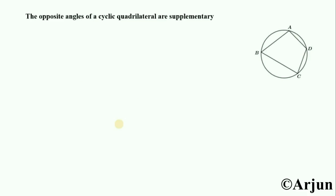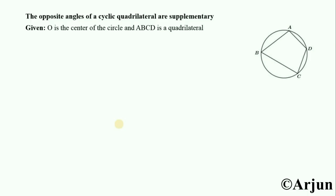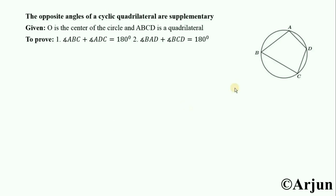For this, our figure ABCD are the cyclic points on a circle, then ABCD is a cyclic quadrilateral. Here, given is O is the center of the circle and ABCD is a quadrilateral. We have to prove that angle ABC plus angle ADC equals 180 degrees, and angle BAD plus angle BCD equals 180 degrees.